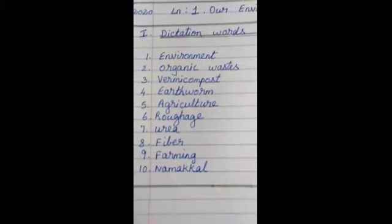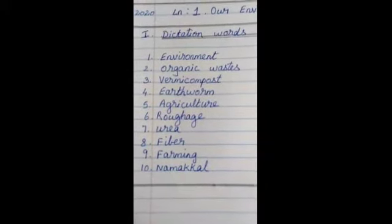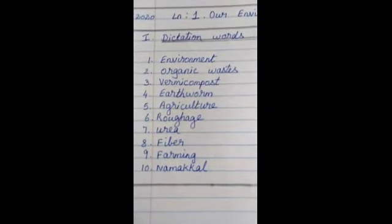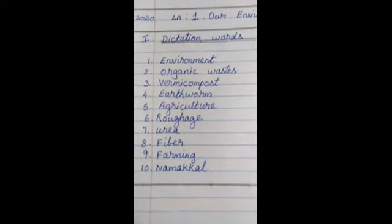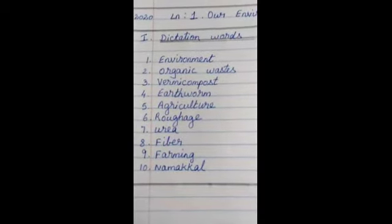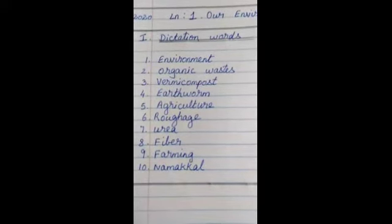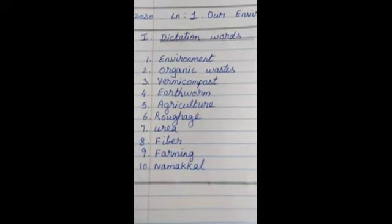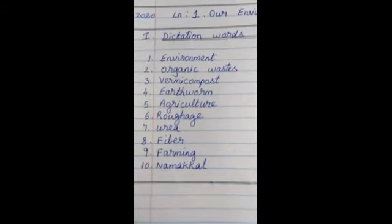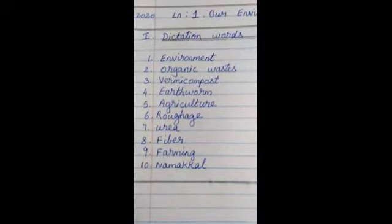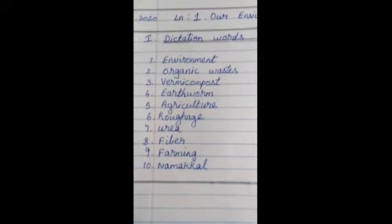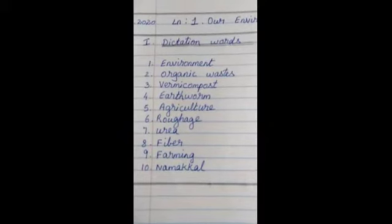Environment. Put number 2, and write organic wastes. The third one, vermicompost. Fourth one, earthworm. Fifth one, agriculture. Sixth one, roughage. Seventh one, urea. Eighth one, fiber. Ninth one, farming. Tenth one, manure. That's all. The first Roman numeral education words, ten is over. You are finished writing it now.